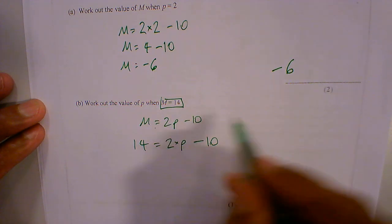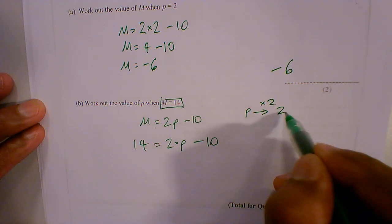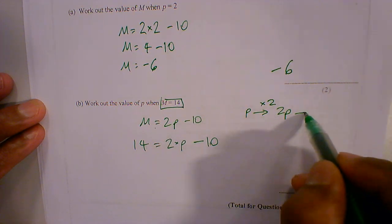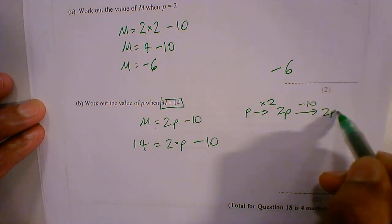We are multiplying it by 2, so it becomes 2p. Then we are taking away 10, so it becomes 2p minus 10.